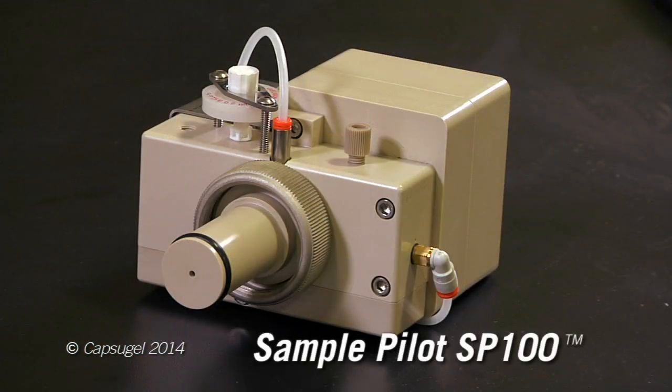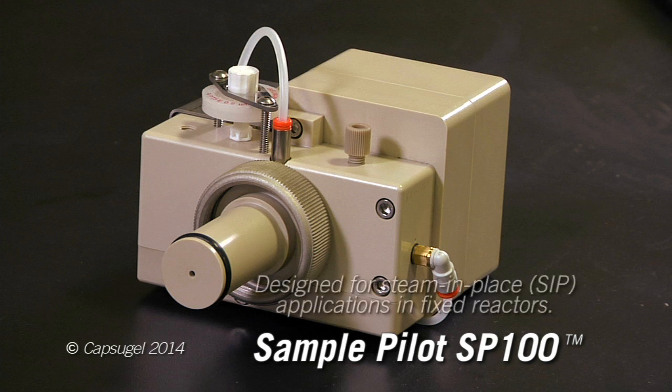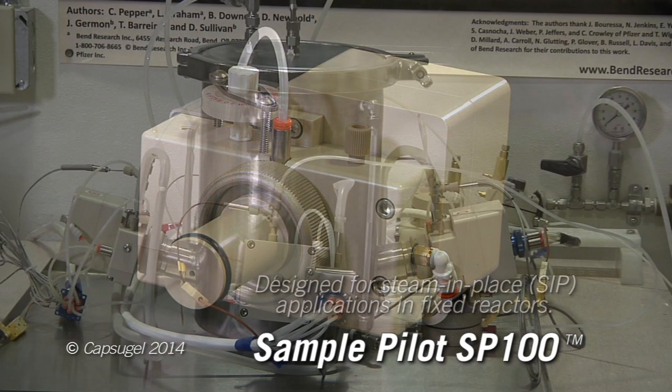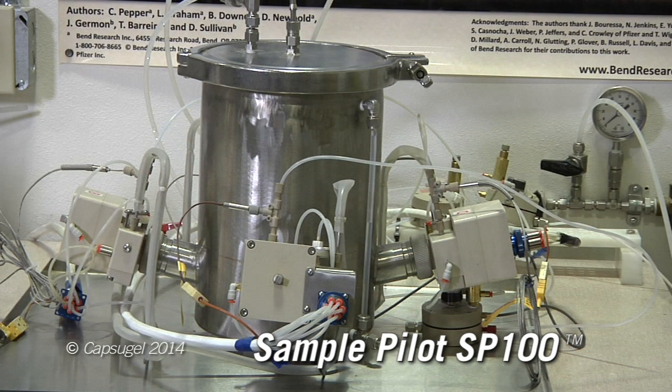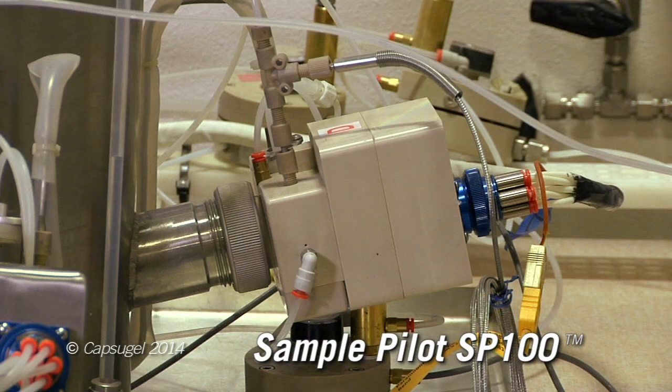The sample pilot SP100 was the original sampling system. It is designed for steam in place or SIP applications for stainless steel reactors. It can collect larger volume samples and has been proven in microbial and mammalian cell culture applications. After each sample, it is flushed with steam condensate.